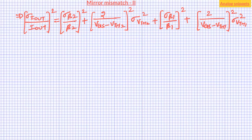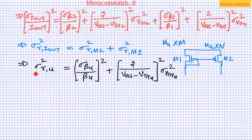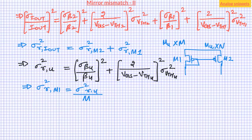Let's write this in a simpler form where R stands for relative variance. The first two terms are represented by sigma squared R_M2 and the last two terms by sigma squared R_M1. Now let's assume M1 and M2 are made of identical unit devices, where M1 is made of M unit devices in parallel and M2 is made of N unit devices in parallel. We define sigma squared R_U for the unit device. Since M1 is M unit devices in parallel, the relative variance in the current of M1 will be M times smaller than for the unit device.